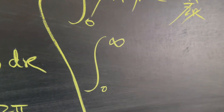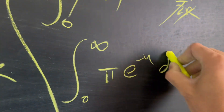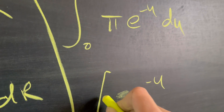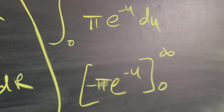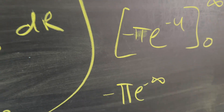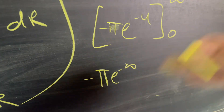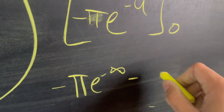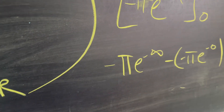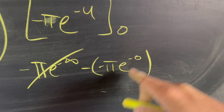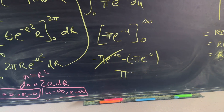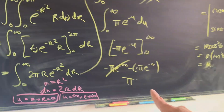We're left with the integral from 0 to infinity of pi times e to the negative u du. That integrates to negative pi e to the negative u, evaluated from 0 to infinity. Plugging in infinity gives negative pi e to the negative infinity, which is 0. Plugging in 0 gives negative pi e to the 0, which is negative pi — and subtracting negative pi gives positive pi. So I squared equals pi.